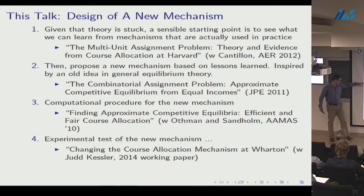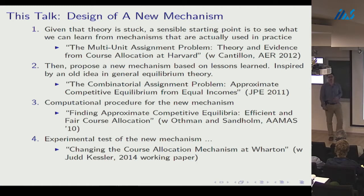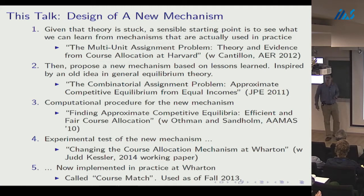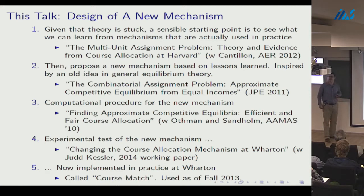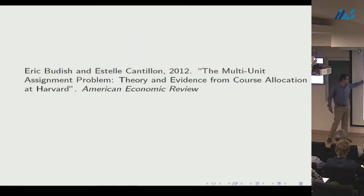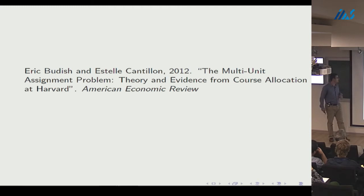There's also an experimental test of the new mechanism at the Wharton School, joint with Judd Kessler, and a discussion of the actual implementation — which Wharton calls 'Course Match,' though to me it's a competitive equilibrium from equal incomes. Now let me discuss the work with Estelle Cantillon from a 2012 paper in the AER.